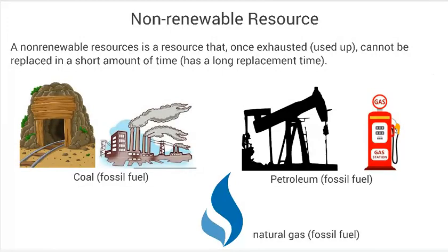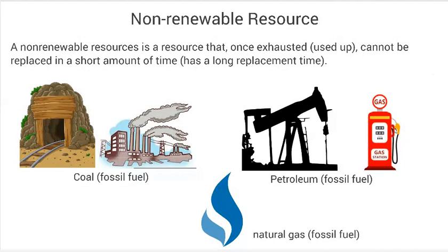Coal is a fossil fuel that we mine, and what we do is burn it to make energy. A lot of our coal is used to power factories. If you've ever seen a factory running, it has big clouds of smoke coming out — that factory may be running off coal. People use coal because it is really efficient: you can get coal, burn it, and it provides a lot of energy.